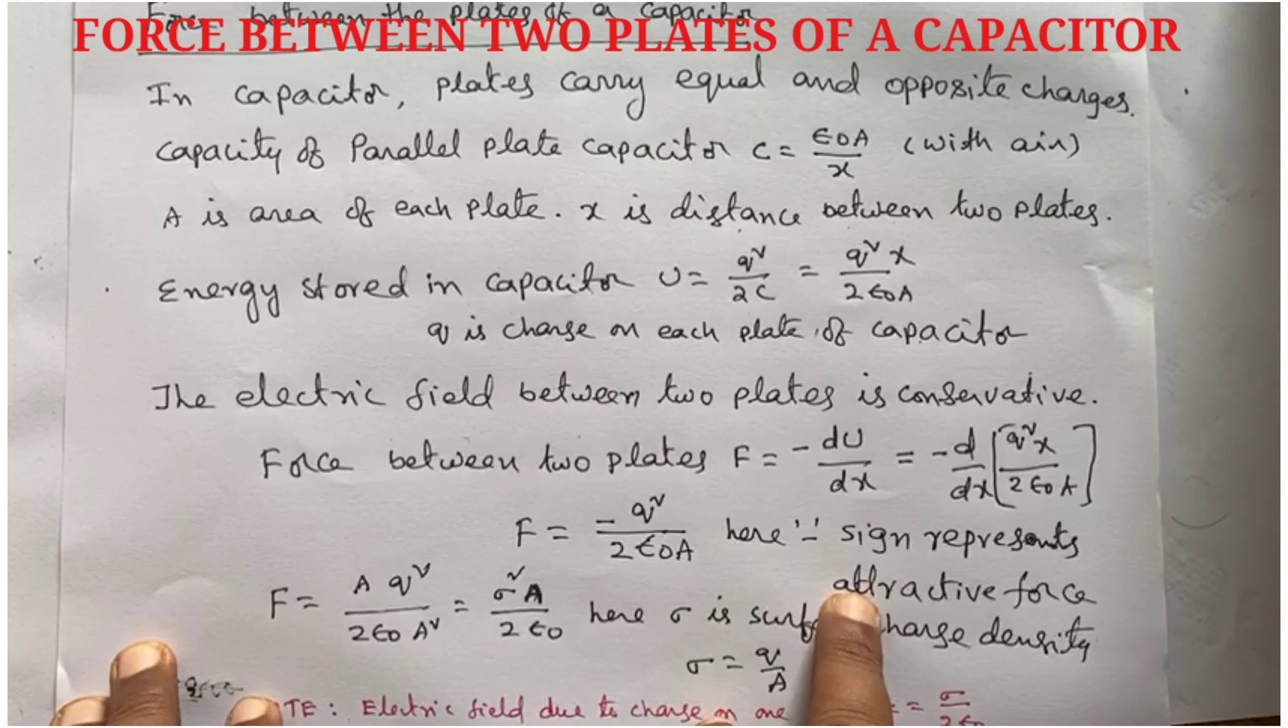Air is taken between the plates. Energy stored in the capacitor U equals q square by 2C. Substitute the value of C: q square into x by 2 epsilon not A, where q is the charge on each plate of the capacitor.